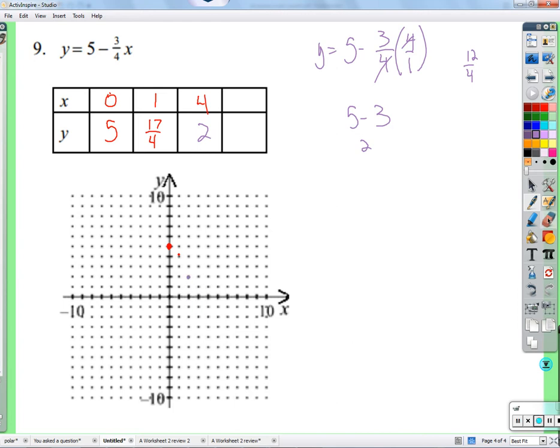Let's see what happens when we do 4. We do 5 minus 3 over 4 times 4. If you feel a little bit iffy about cross-cancelling, just multiply it. You'll wind up with 12 over 4. 12 over 4 is 3. So what do we wind up with? Just 5 minus 3, and that's 2.